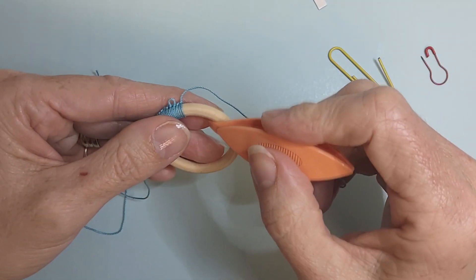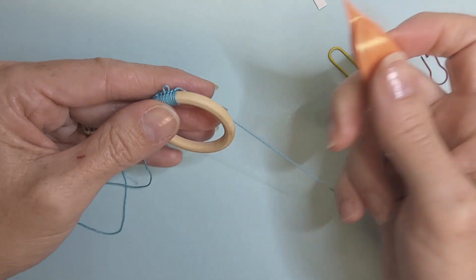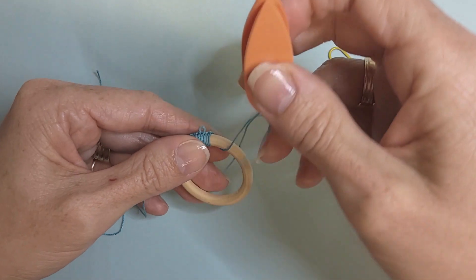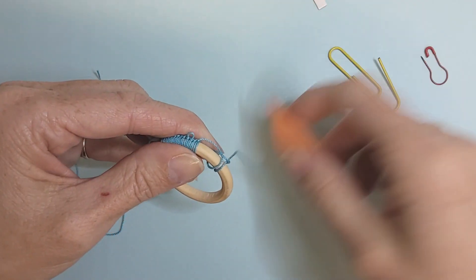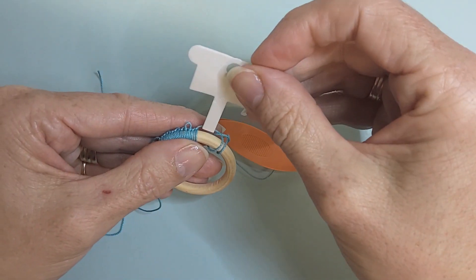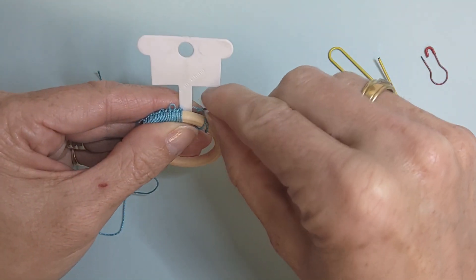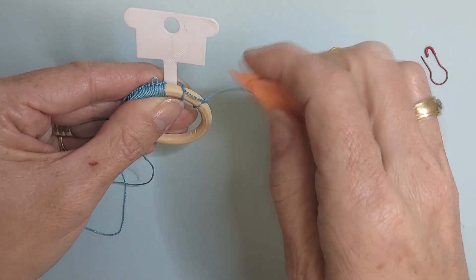If you want to use a gauge but you find it tricky to hold onto everything at the same time, work your stitch, leave it reasonably loose, pop the gauge in, and then adjust the thread.